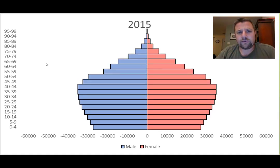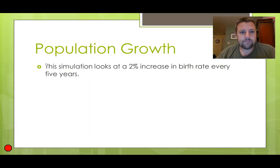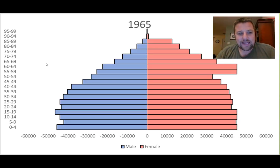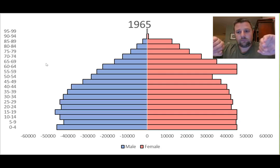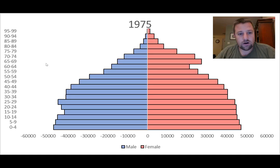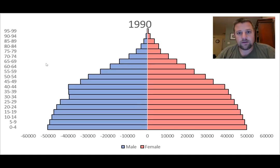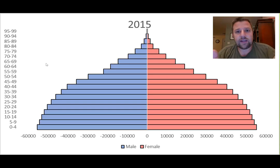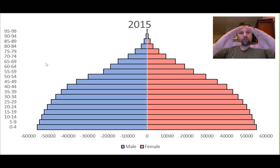Eventually that bulge totally disappeared because all those people died off. Now I have one more simulation — same Excel file, but this time modeling a 2% increase in birth rate every 5 years. There's that bulge again on the female side, 55 to 64 year olds. But this time, look at the bottommost bar — the 0 to 4 year olds. Rather than shrinking, it's going to grow and bulge out. It gets bigger every 5 years. So in this fictional society, because the birth rate is increasing every 5 years, the pyramid takes on this bulgey pyramid shape.